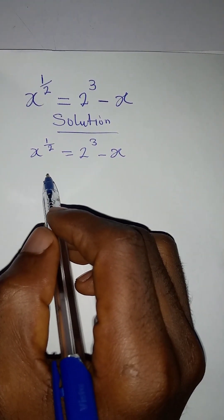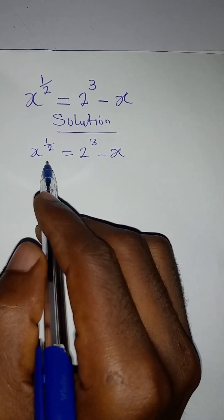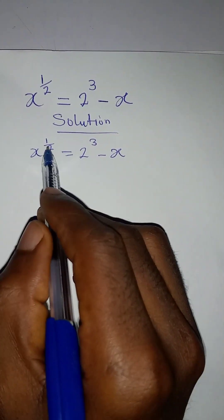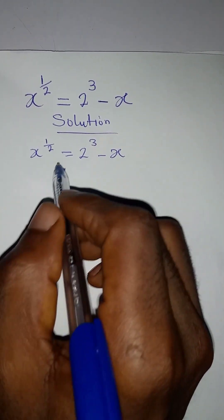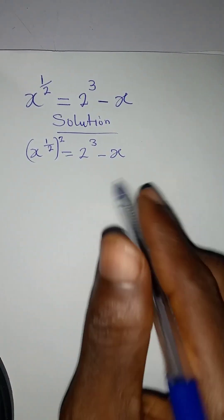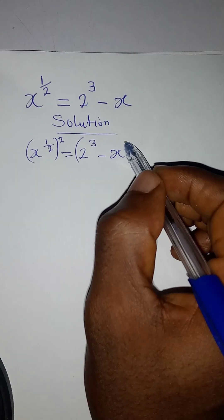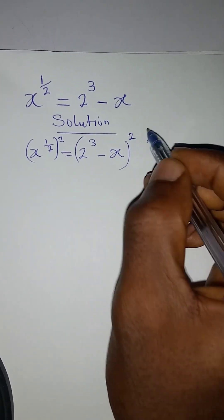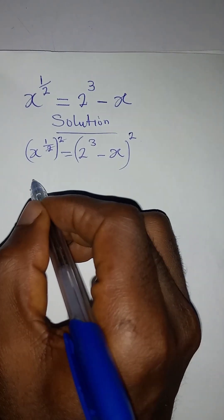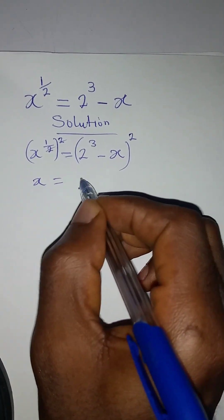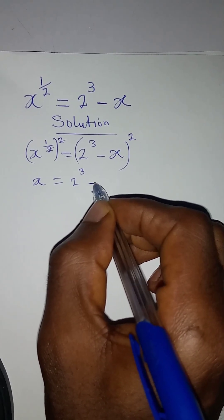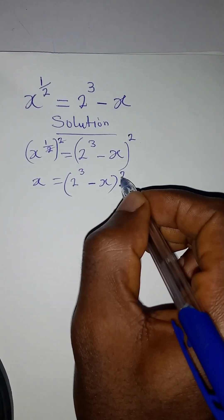The first step is to remove this power of 1/2, and we do that by squaring both sides. So combining and squaring — this will cancel that, and x will be equal to 2 to the power of 3 minus x, in two places.